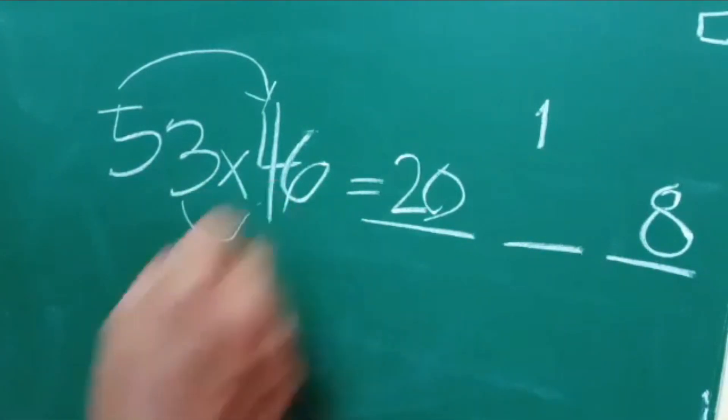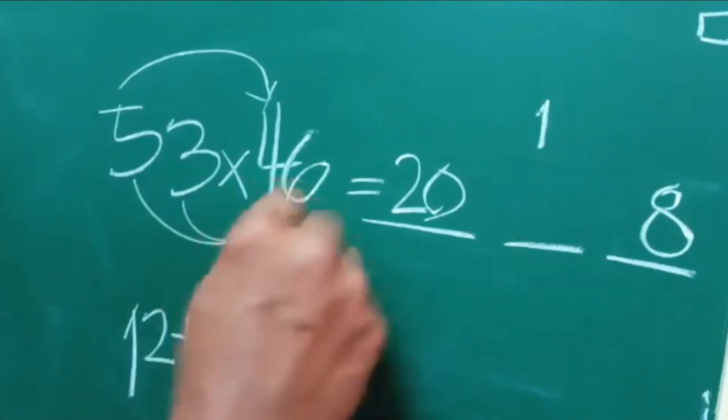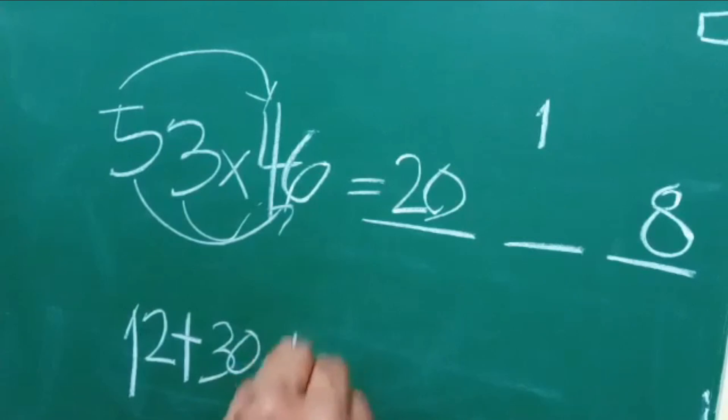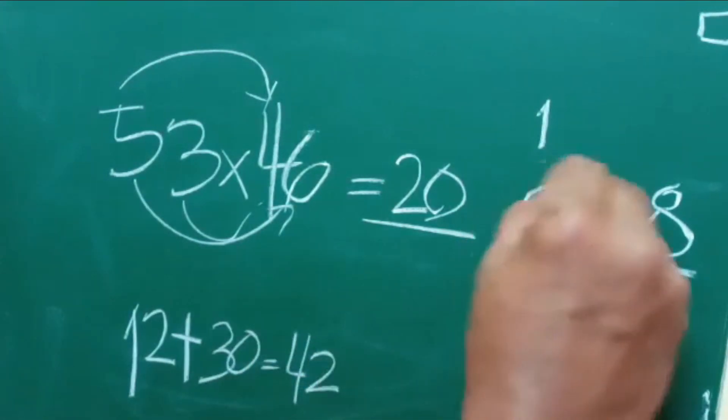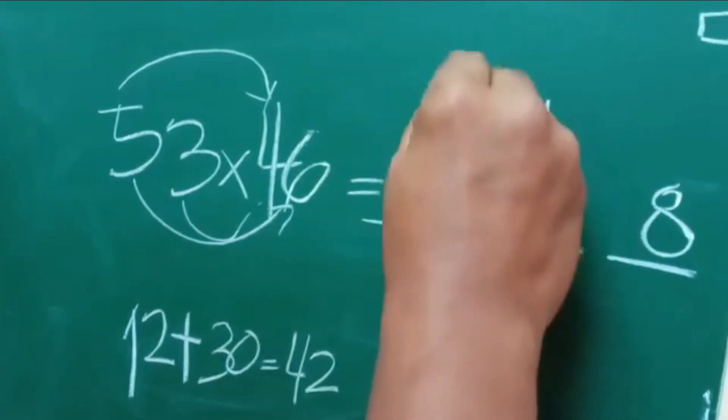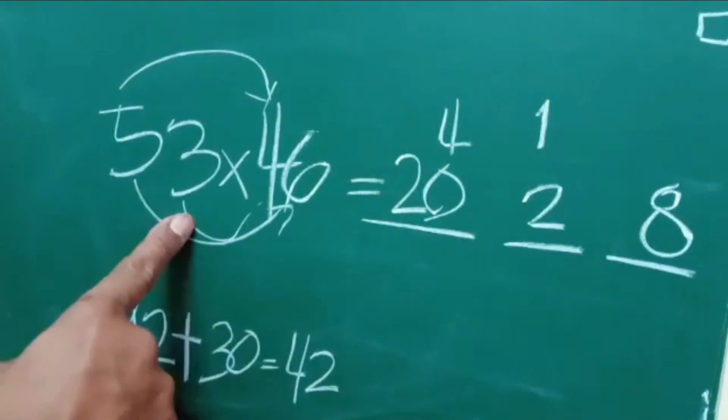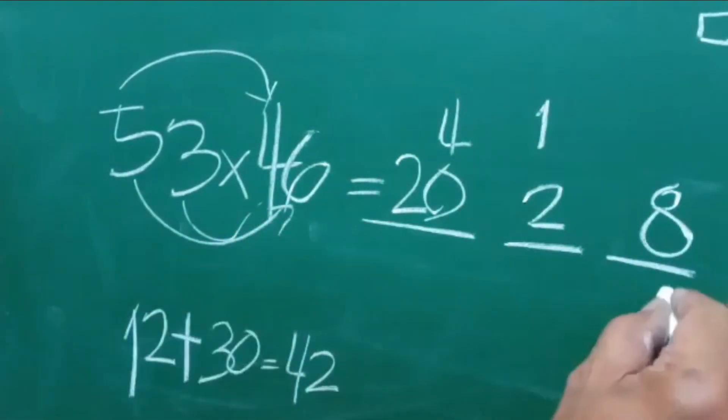Now at the bottom, 3 times 4 is equal to 12. 5 times 6 is equal to 30. It is equivalent to 42, so this 42 you have to put the 2 here and then you have to put the 4 here. So the answer for 53 times 46 is equal to 2438.